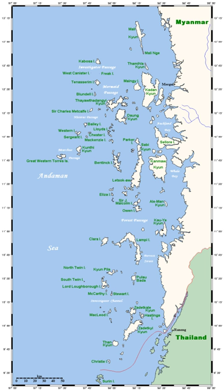Oceanic islands are mainly of volcanic origin, and widely separated from any adjacent continent. The Hawaiian Islands and Easter Island in the Pacific, and Eel Amsterdam in the South Indian Ocean are examples.